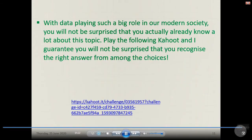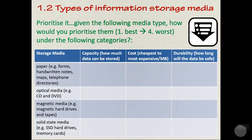Here's a sample task thinking about different types of information storage media. It's a prioritisation task. Given the following types of media — paper, optical media like CDs, magnetic media like a hard drive, and solid state like memory cards — think about the best to worst in terms of capacity (how much data can be stored), cost (cheapest to most expensive per megabyte), and durability (how long your data will be kept safe on that particular type of media). Pause the video and have a go on paper now.